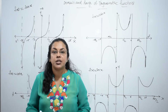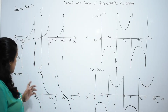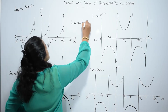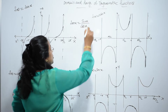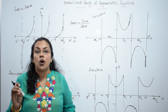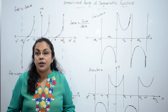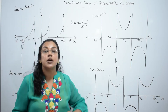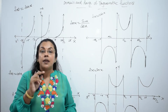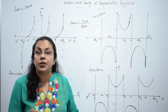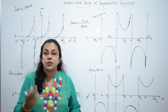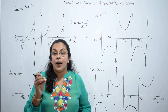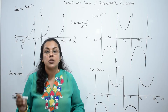Now consider the other trigonometric functions: tan, cot, cosec and sec. Look at tan first. Tan x equals sin x divided by cos x. The domain means those values of x for which f(x) is defined. Tan x is not defined when cos x equals 0, meaning tan x equals infinity when cos x equals 0. We know cos x is 0 at odd multiples of π/2.